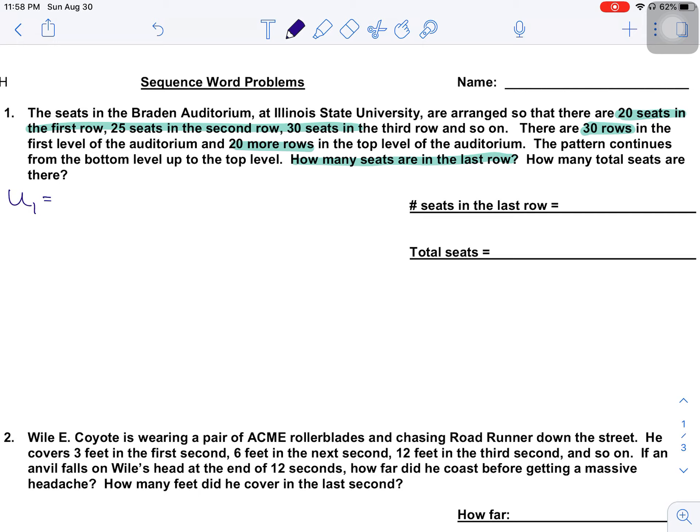So if I want to know how many seats are in the last row, a couple things I want to make note of for myself. U sub 1 is 20. That's how many seats are in the first row. The number of seats per row is changing by 5 seats each time, right? 20, 25, 30, 35, and so forth. So my D value is 5. And I also know there are a total of 50 rows. 30 rows in the first level, 20 more rows in the top level.